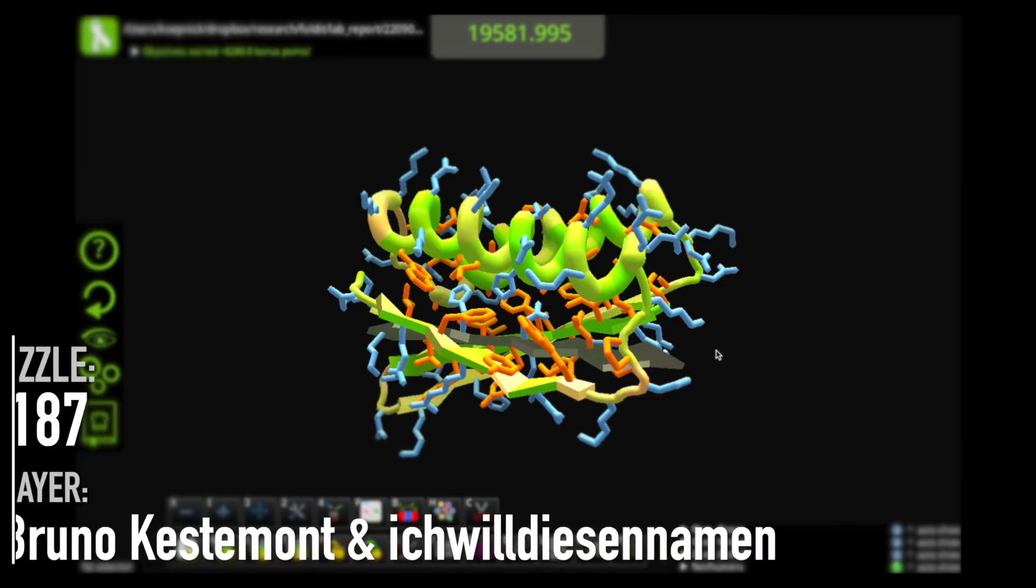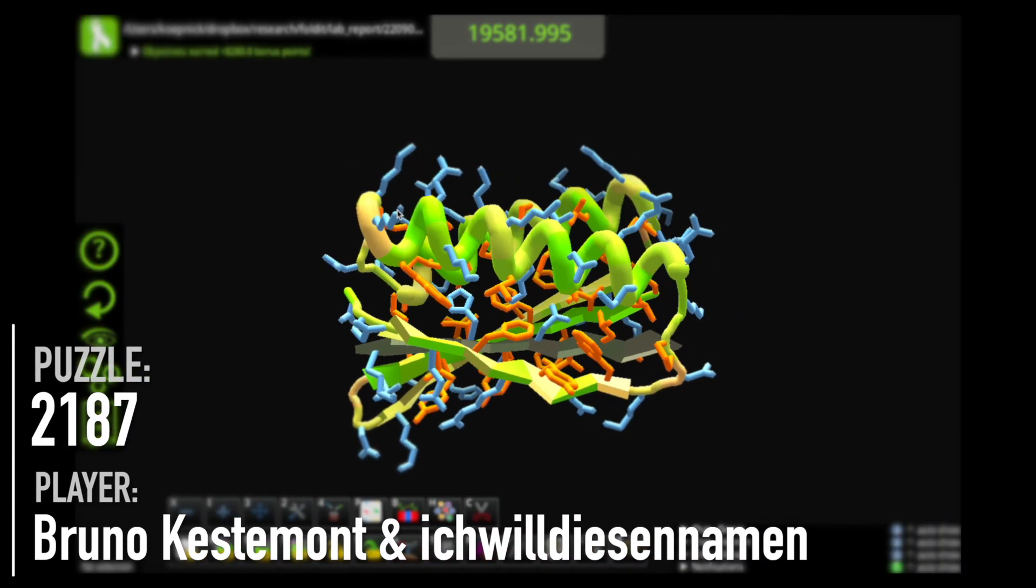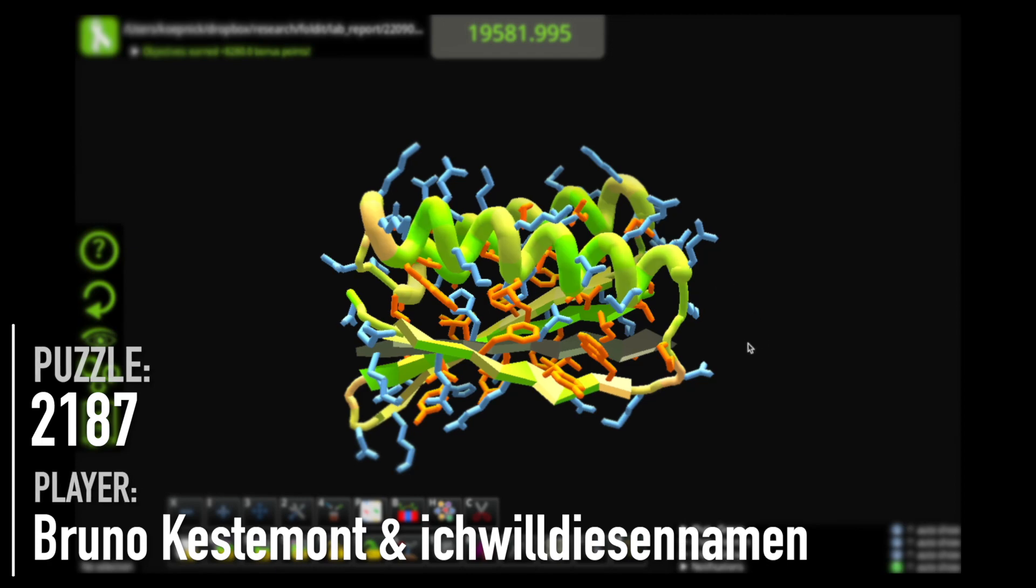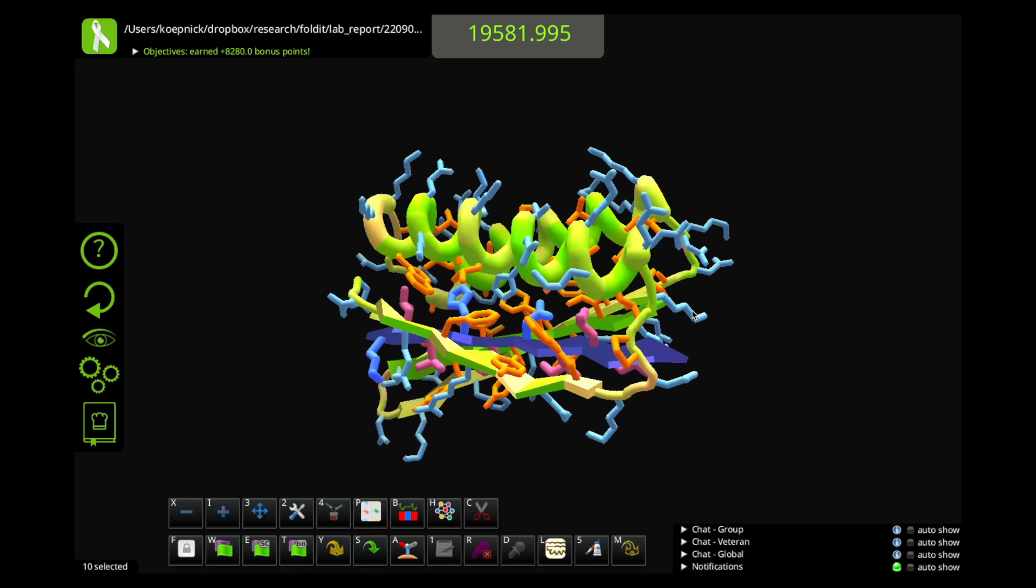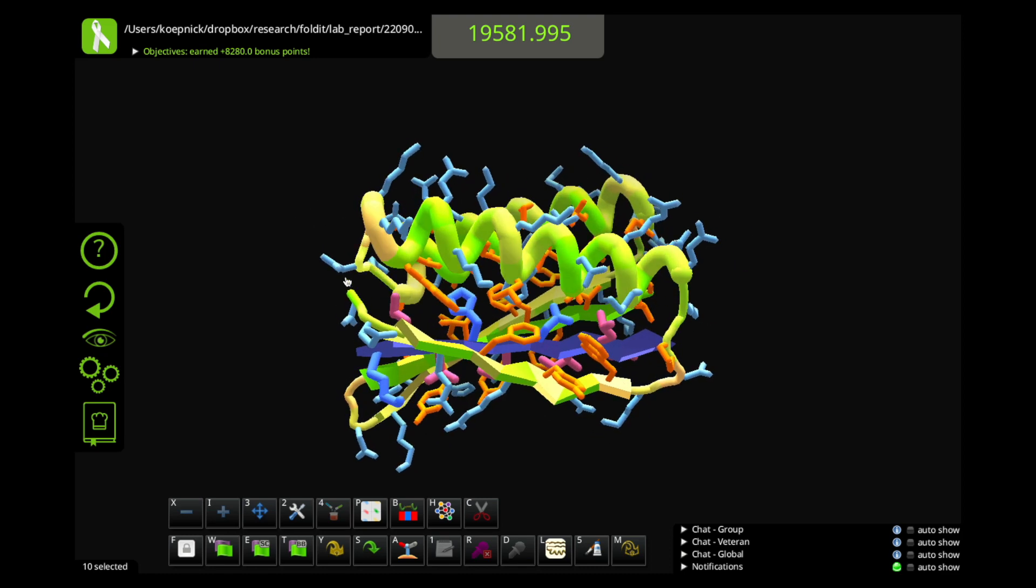And that brings us to the design of the month. We have a strand binder design by Bruno Castamont and Iqvildizanaman. This is from puzzle 2187. Now this binder design puzzle is different from normal binder design because in this puzzle we have control over the sequence of the target. We can redesign this target strand to be any sequence that we like. And this will be mostly important for lab experiments where we want to bring two proteins of interest together. We can tether one to our strand here, and we can tether the other to our binder. And if we mix those in solution, then we can be certain that this binding association will bring our proteins of interest together.